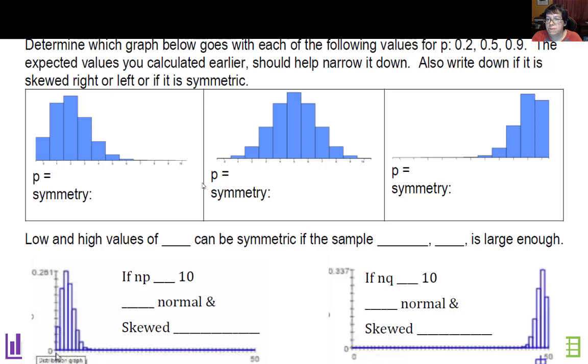Determine which graph goes with each of the following values. p = 0.2 is the left graph with only a few trials, skewed to the right. The middle one is p = 0.5, roughly symmetric. The right one is p = 0.9, skewed left.